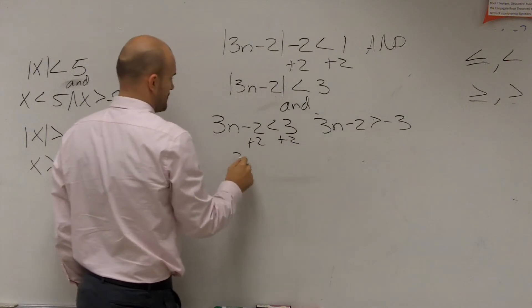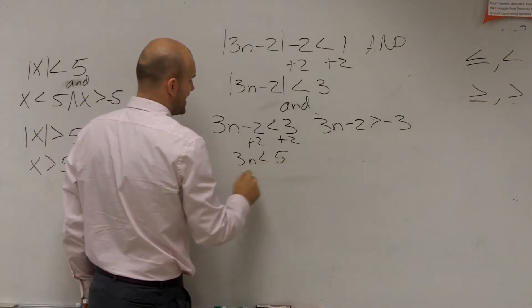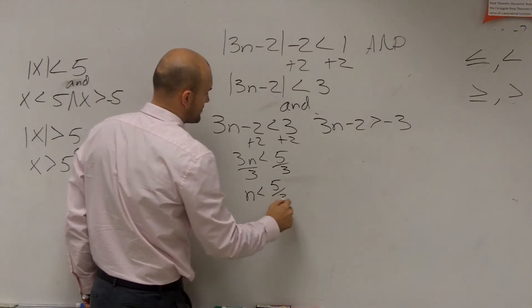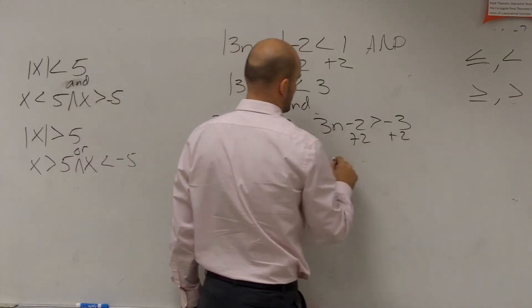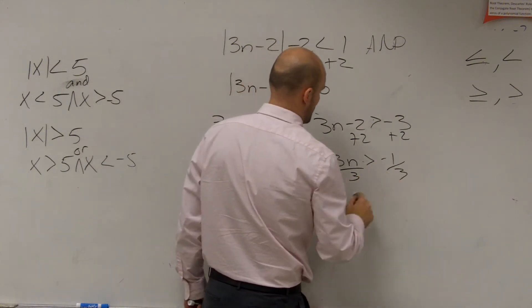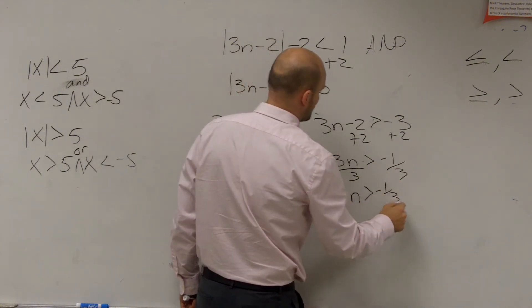n is less than 5/3. Here, add 2. 3n is greater than negative 1. n is greater than negative 1/3.